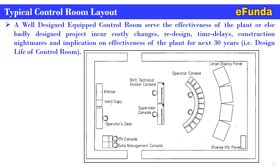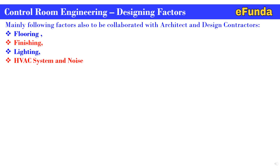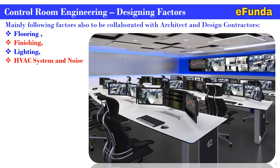A scientifically designed control room is required. The typical control room layout shows operator console arrangement, large display panel, shift technical advisor console, supervisor console, printer, hard copy operator desk, TV console, data management console, and diverse access panel. Control room engineering design factors must be collaborated with architecture and design contractors covering flooring, finishing, lighting, HVAC system, and noise.